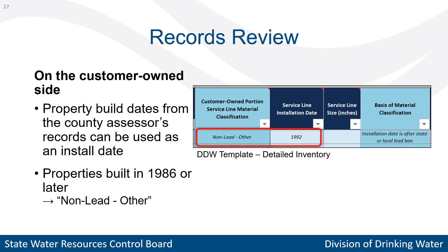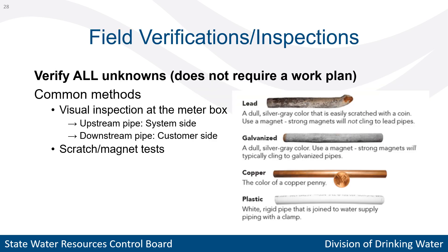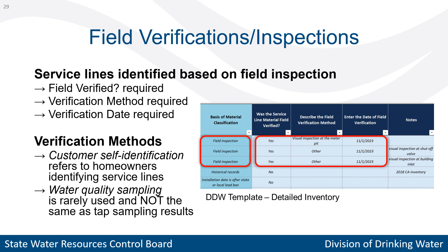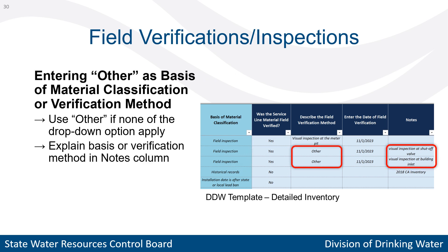If you still have unknown service lines after the records review, you'll have to identify the material with a field inspection. If you choose to field verify all remaining unknowns, you do not need to submit an inventory work plan. Some common verification methods include visual inspections at the meter box, scratch tests, and magnet tests as pictured on the right. If you select field inspection in the basis of material classification column, be sure to also fill out the field verified, verification method, and verification date columns. If you select other in the basis of material classification or verification method columns, please describe the method in the notes column.